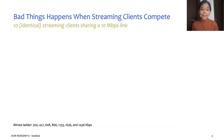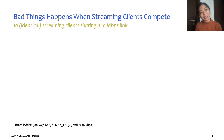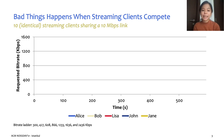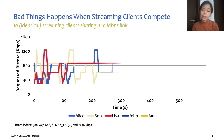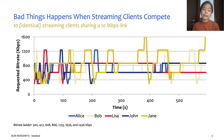Let us understand one of the key challenges faced in such streaming applications, which is to manage multiple competing clients. In this example, we illustrate what could happen when 10 clients concurrently stream from the same server over a 10 Mbps link. Ideally, all the clients should share the link equally and consistently stream the video at the same bit rate, which in this case should be the 866 kbps representation for each client.